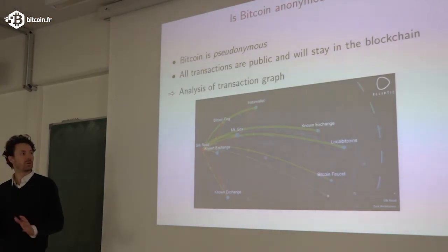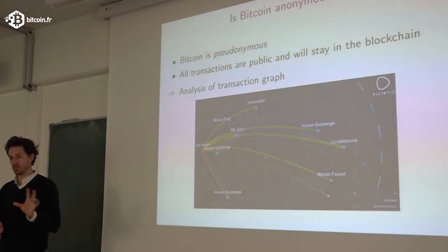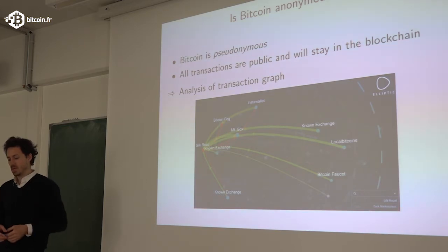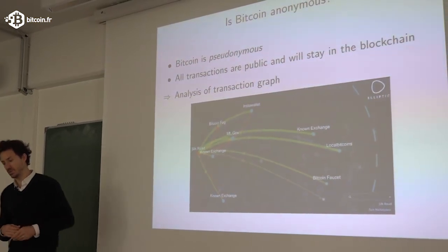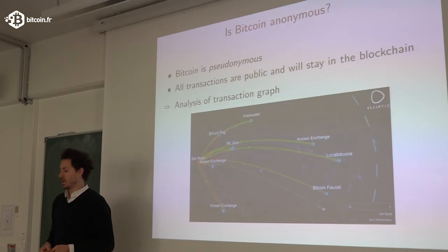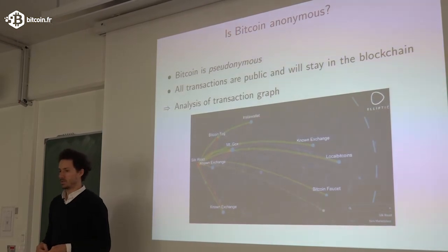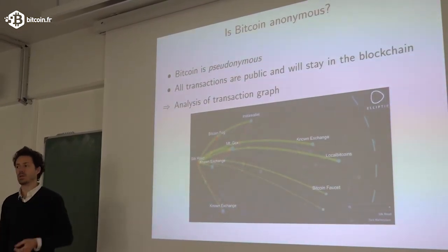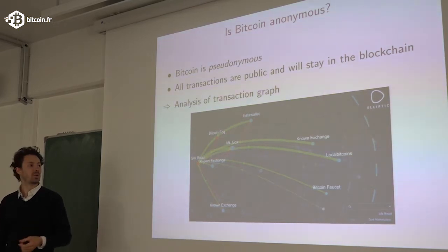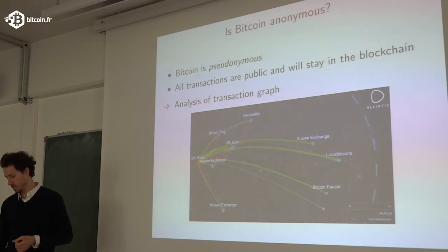Bitcoin is not anonymous — it's pseudonymous. Users are not known by their names but just by their addresses. All transactions are public and will stay in the blockchain forever, so there's plenty of analysis you can do. You can analyze the transaction graph, you can listen to the network to see where a transaction comes from, and so on. There are companies whose business model is exactly such analysis, like Elliptic.